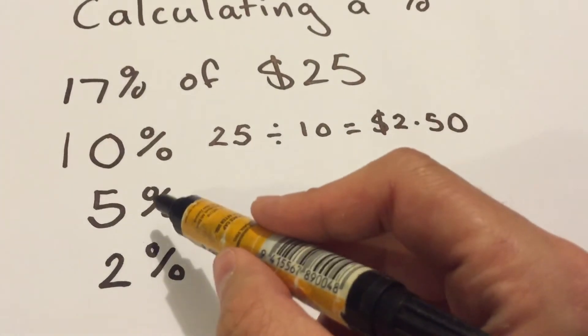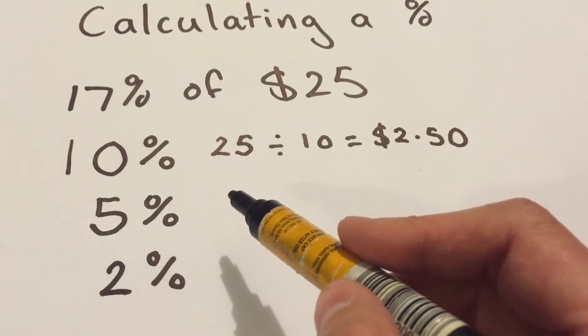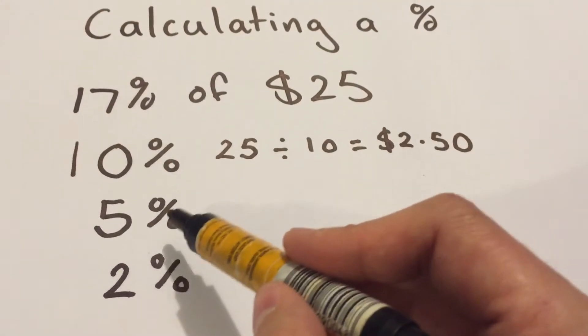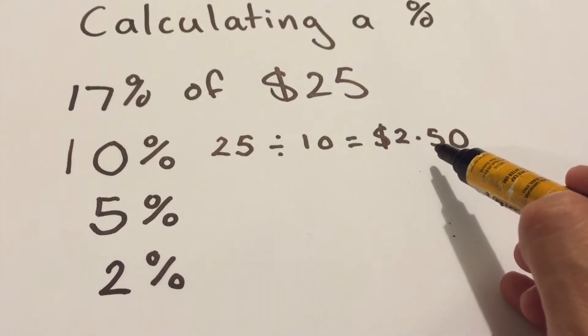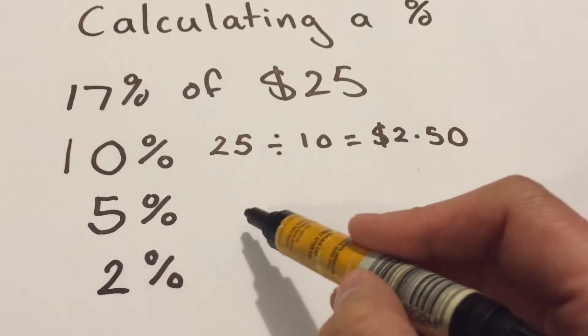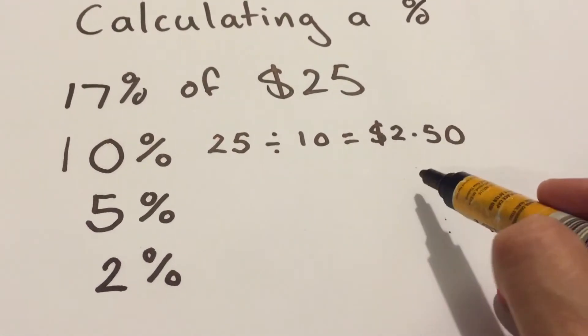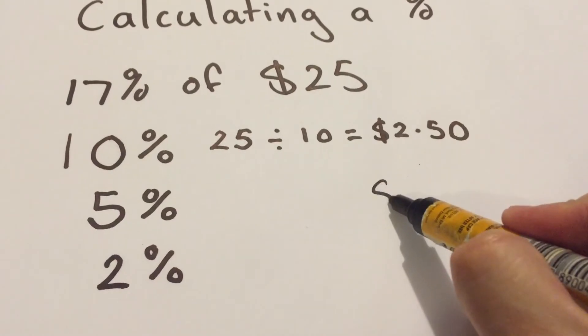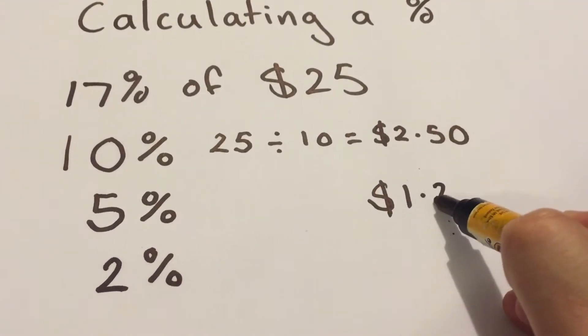Now to find 5%, you may have already spotted it, but 5% is half of 10%. So it's obviously going to be half of your amount you calculated over here as being 10%. So half of your 10%, your 5%, is half of $2.50. What's half of $2.50? Well, it's $1.25.